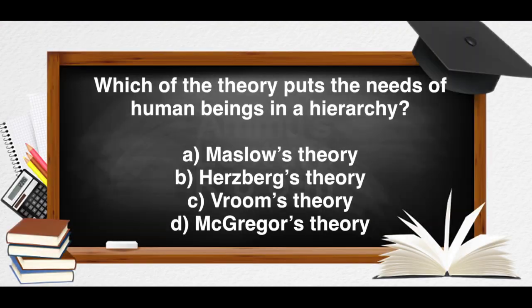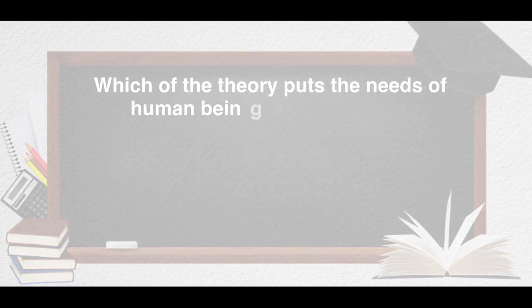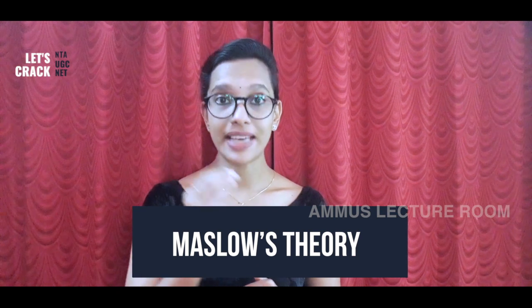For the first part of the video, we have a question: which theory puts the needs of human beings in a hierarchy? The options are Maslow's theory, Herzberg's theory, Vroom's theory, and McGregor's theory. The answer is Maslow's theory.